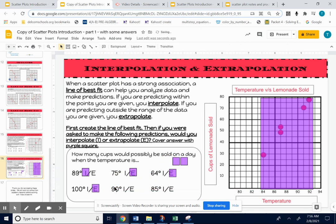If you predict for 90 degrees, that's within the points. That's interpolation. And 85 degrees is about right there. That's inside your range of points. That's interpolation.